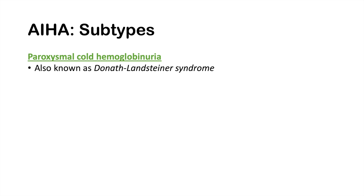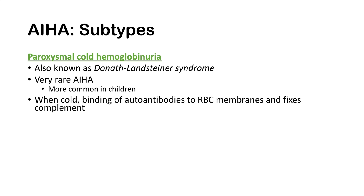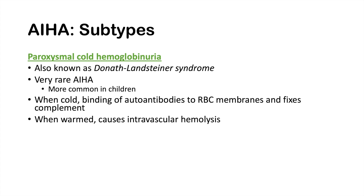The last subtype is paroxysmal cold hemoglobinuria, also known as Donath-Landsteiner syndrome. It is the rarest and most common in children. When cold, autoantibodies bind to red blood cell membranes and fix complement; when warm, intravascular hemolysis occurs. Unlike cold AIHA, which only needs cold temperatures, paroxysmal cold hemoglobinuria requires both cold temperatures for antibody binding and complement fixation, and then warming to trigger intravascular hemolysis.